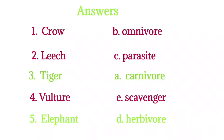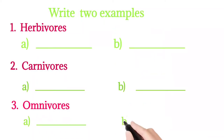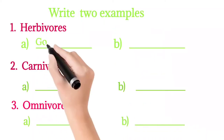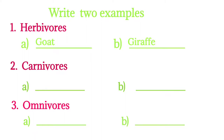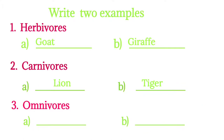Next, write two examples. First, herbivores: cow, goat, giraffe, elephant, etc. Second, carnivores: lion, tiger, cheetah, fox, wolves, etc.